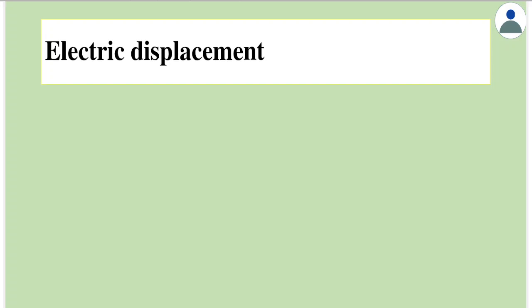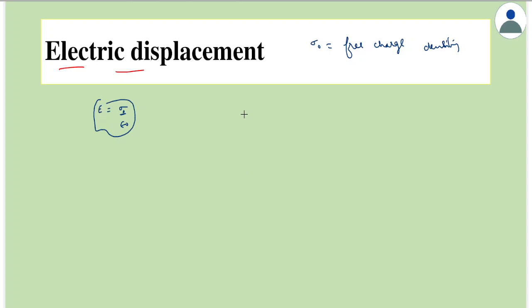Let's study electric displacement. To understand this, recall that the electric field due to a conductor is given as σ₀/ε₀, where σ₀ is called the free charge density. This is the electric field for a conductor in free space. However, in case of a dielectric, the electric field is given as σ₀/ε, where ε is the permittivity of that medium.